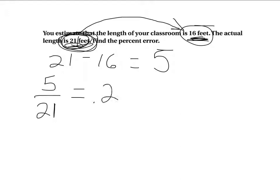When I do that, I'm going to get 0.238, and again, it kind of goes on a little bit, but I'm just going to stop when I get three places after the decimal, and then I'm going to convert that to a percentage, and I'm going to move that obviously two to the right and get 23.8%. So that's my percent error that I was off when I estimated the length of the classroom.